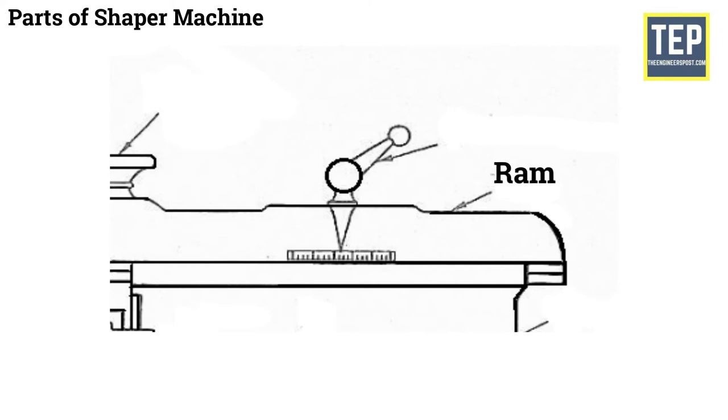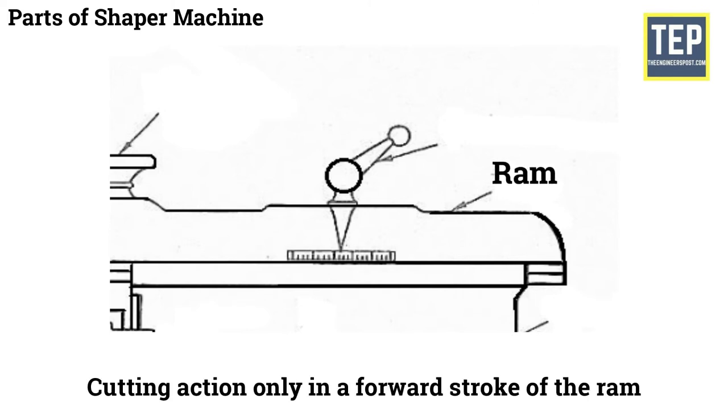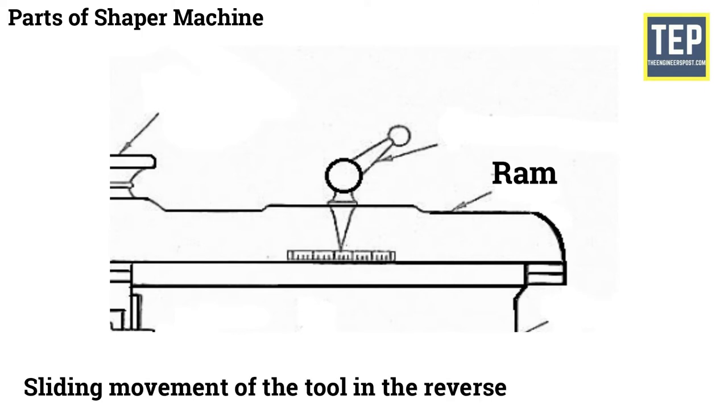The RAM reciprocates on the column guideways and carries the tool head with a single point cutting tool. The tool head is in the clapper box, which causes cutting action only in a forward stroke of the RAM and sliding movement of the tool in the reverse stroke of the RAM. The depth of cut or feed of the tool is given by down feed screw.